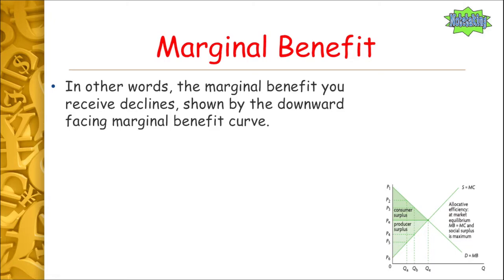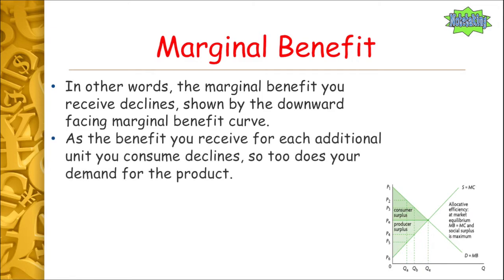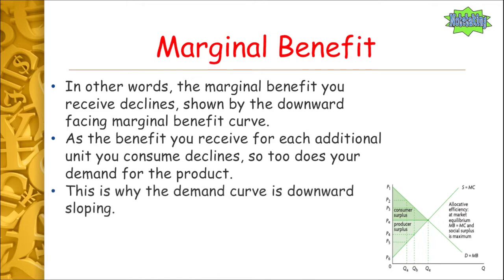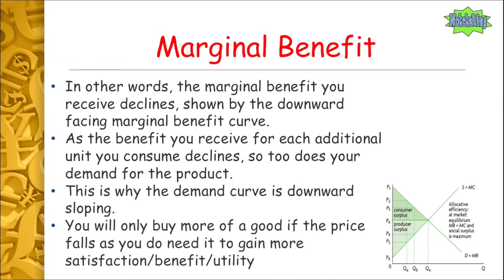So if we look at our marginal benefit curve there — if we consume one unit QA, then a second unit QB, our benefit is declining. When we get down to QE, we've got even less benefit again. As the benefit you receive for each additional unit you consume declines, so too does your demand for the product, which makes sense. Because if you're no longer getting the same enjoyment from the product, you're not going to buy as much of it anymore — you're going to buy other goods and services instead. This is why the demand curve is downward sloping. You'll only buy more of a unit if the price falls, as you need it to gain more satisfaction or benefit or utility. So that explains why our marginal benefit curve is downward sloping.